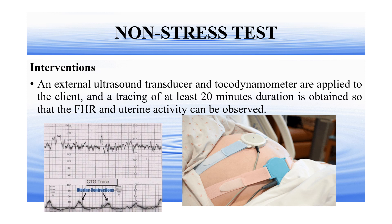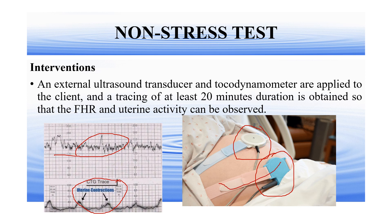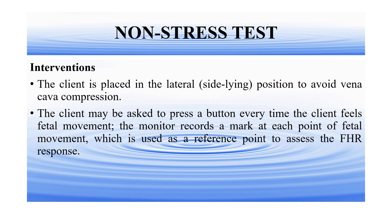In the non-stress test, we apply monitor sensors on the abdomen of the pregnant woman. There are two monitor sensors: one is a contraction monitor sensor and one is a fetal heart rate monitor sensor. The contraction monitor sensor records uterine contraction on the graph and the fetal heart rate sensor records the fetal heart rate on the graph. The non-stress test uses an external ultrasound transducer and a tocodynamometer — the ultrasound transducer assesses the fetal heart rate and the tocodynamometer assesses uterine contraction. A tracing of at least 20 minutes duration is obtained. The client is placed in a lateral or side-lying position to avoid vena cava compression that occurs in the supine position. The client may be asked to press the button every time fetal movement is felt, and the monitor records a mark at each point of fetal movement as a reference to assess the fetal heart rate response.